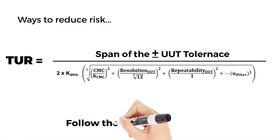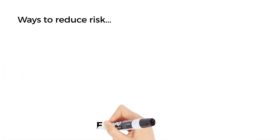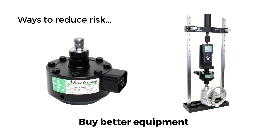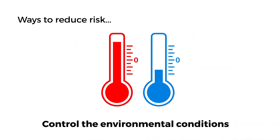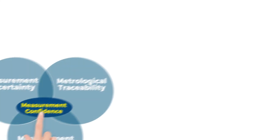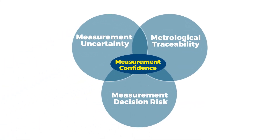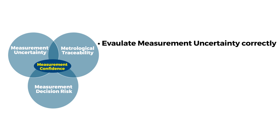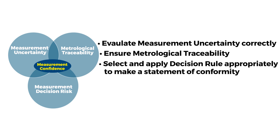The ways to reduce the risk are simple: follow the formula for TUR, find calibration labs such as Morehouse with the lowest measurement uncertainties, buy better equipment that is repeatable and has enough resolution, and control the environmental conditions. To ensure confidence in our measurements and make the world a safer place to live in, we need to evaluate measurement uncertainty correctly, ensure metrological traceability, and select and apply the decision rule appropriately to make a statement of conformity.